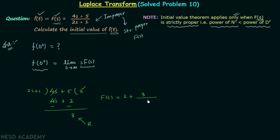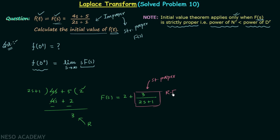We can now write F(s) = 2 + 3/(2s + 1). Looking at 3/(2s + 1), the power of the denominator is greater than the power of the numerator, so this part is strictly proper. This is known as the remainder function.